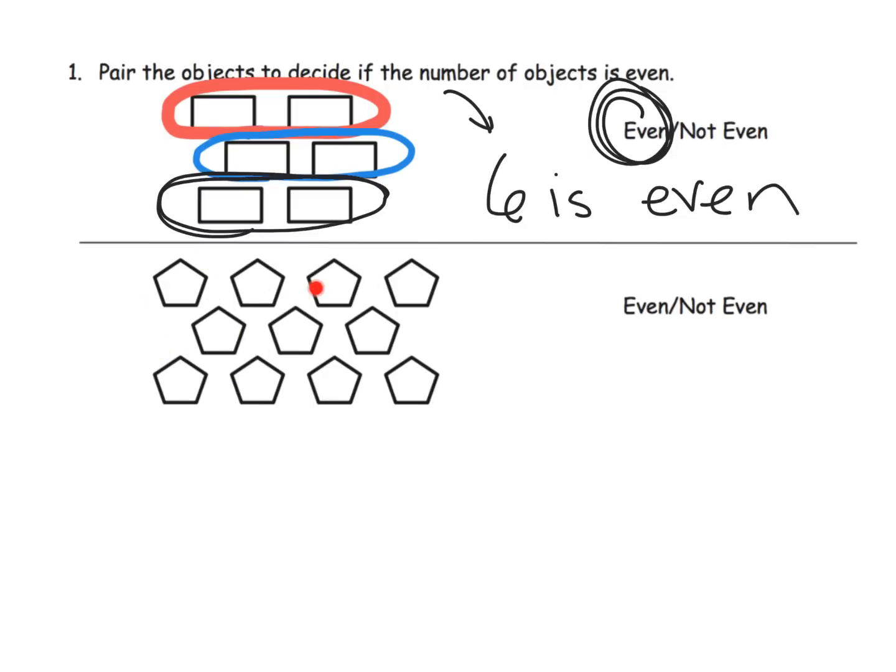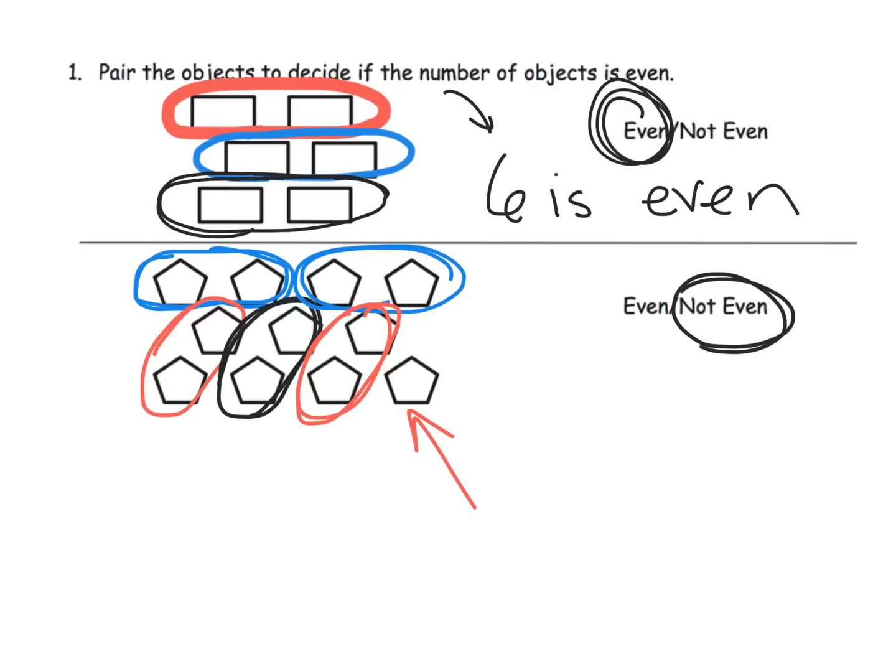Let's continue with this one. Does everybody have a partner? This pentagon goes with that pentagon, this pentagon goes with that pentagon, this pentagon goes with that pentagon, this guy has a partner right there, and then this guy goes right here. But uh oh, that guy's left alone. He doesn't have a partner, which means this is not even. You'll notice they're using the word 'not even' rather than odd, and that's perfectly fine at this moment.